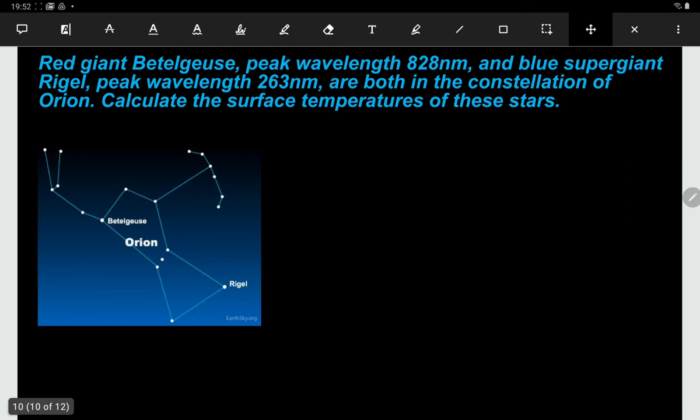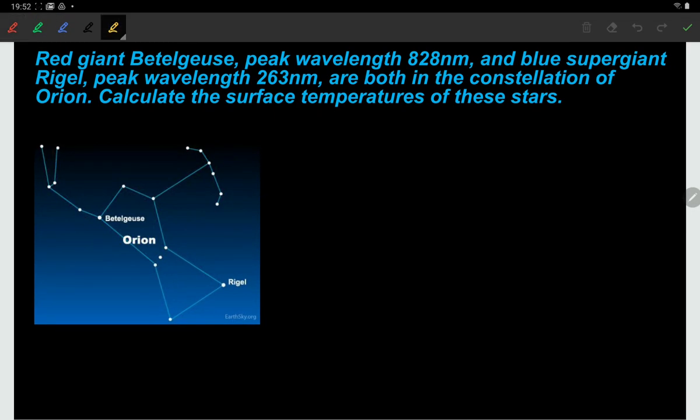So more questions with Wien's displacement law. We've got our good old friend, the constellation Orion, and there are two stars in the constellation, Betelgeuse and Rigel. We're told the wavelengths of both of those stars and we're asked to calculate the surface temperatures. Let's try, we'll do Betelgeuse first. We're going to use T equals 0.0029 over lambda. For Betelgeuse we can put the numbers in - 0.0029 divided by, and the wavelength is 828 nanometers.